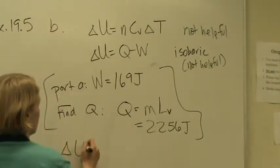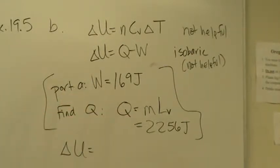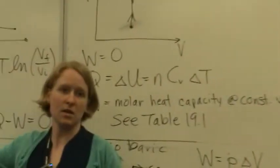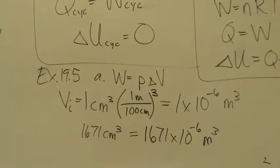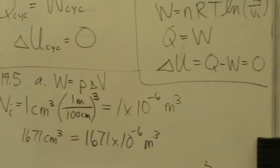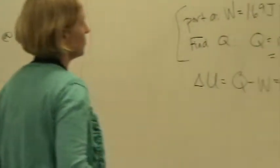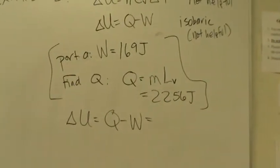I'm sorry but I missed where you got the U equals one sixty-nine joules. Oh work? Yeah. That was from part A over here if we actually solve pressure times delta V. Okay. Yeah.